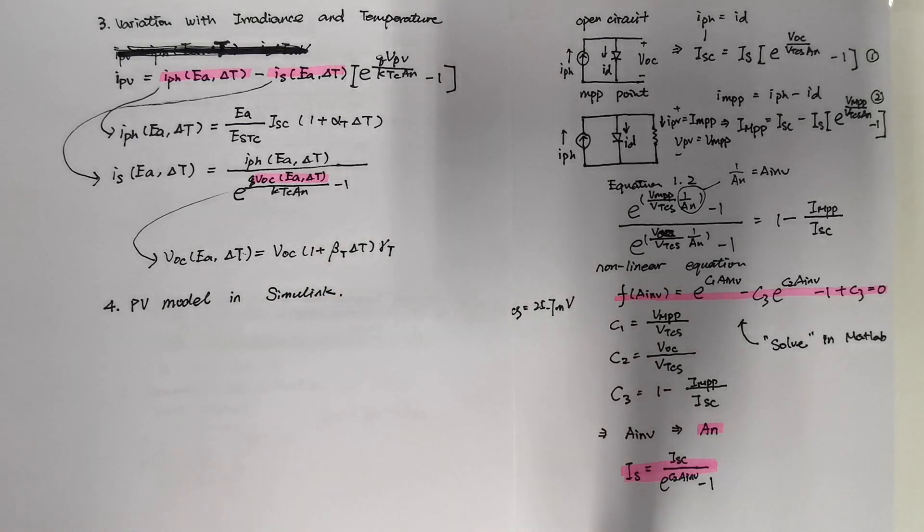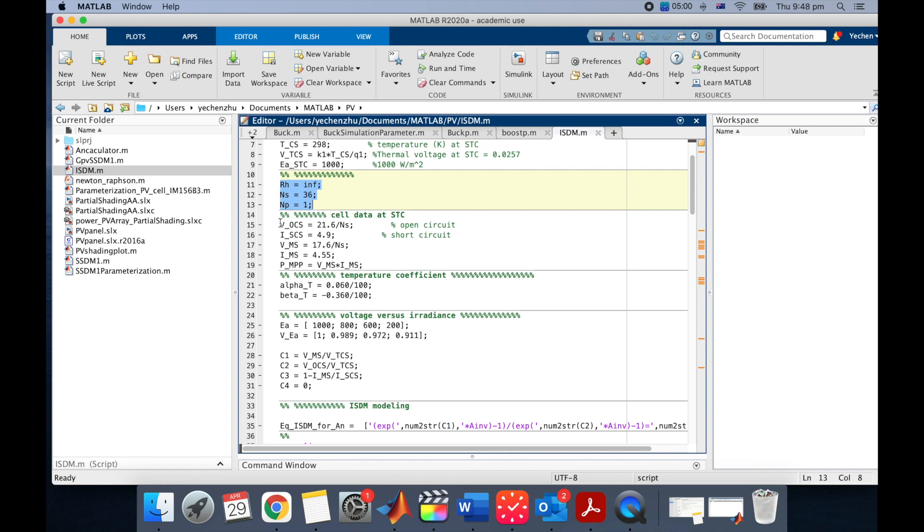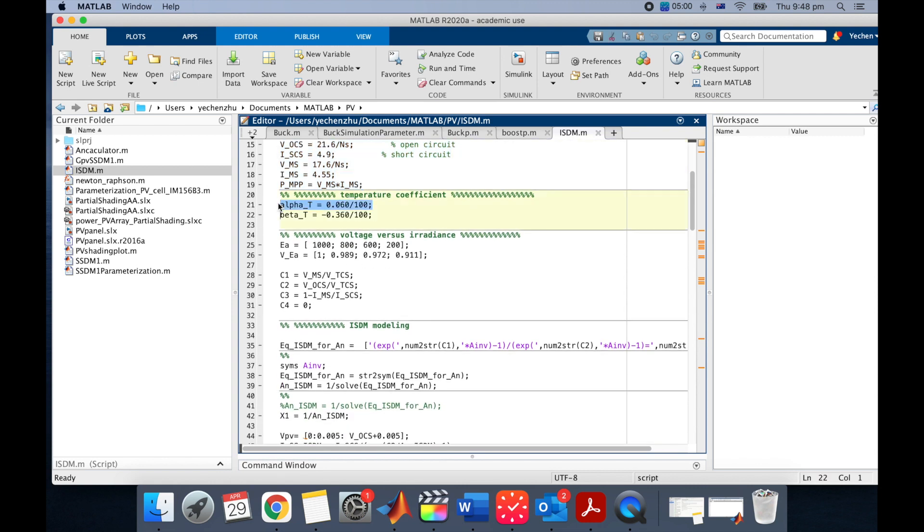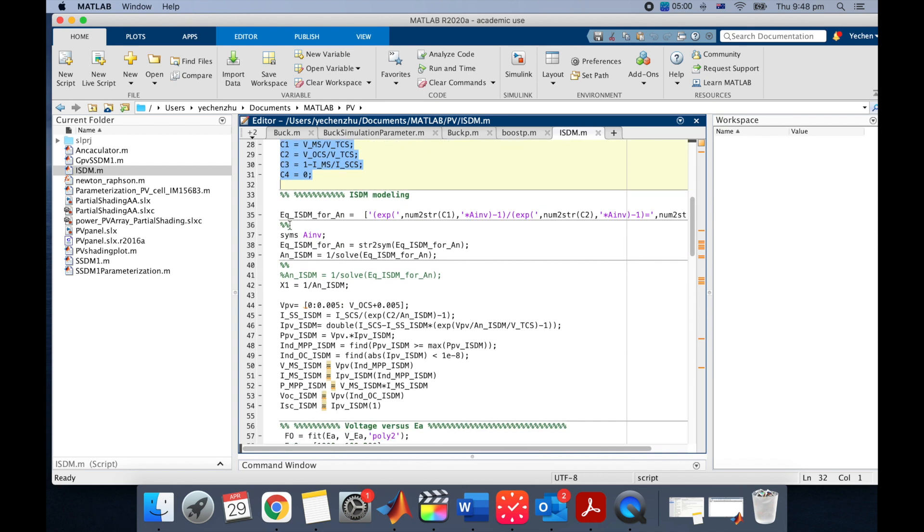The last part is we actually built this in MATLAB Simulink. So this is the ISDM model I built in MATLAB. So this is all the known parameters in our equation. And here I'm building a PV panel that has 36 cells. And this is my values from the data sheet. And this is temperature coefficients. And this is irradiance coefficients. And this is C1 to C3.